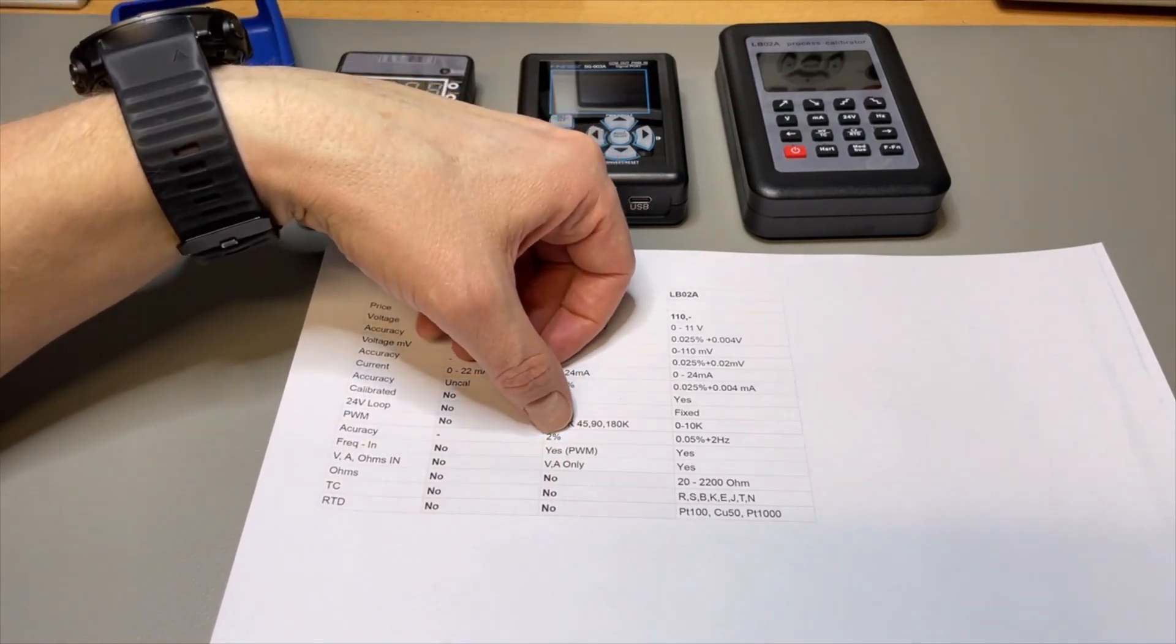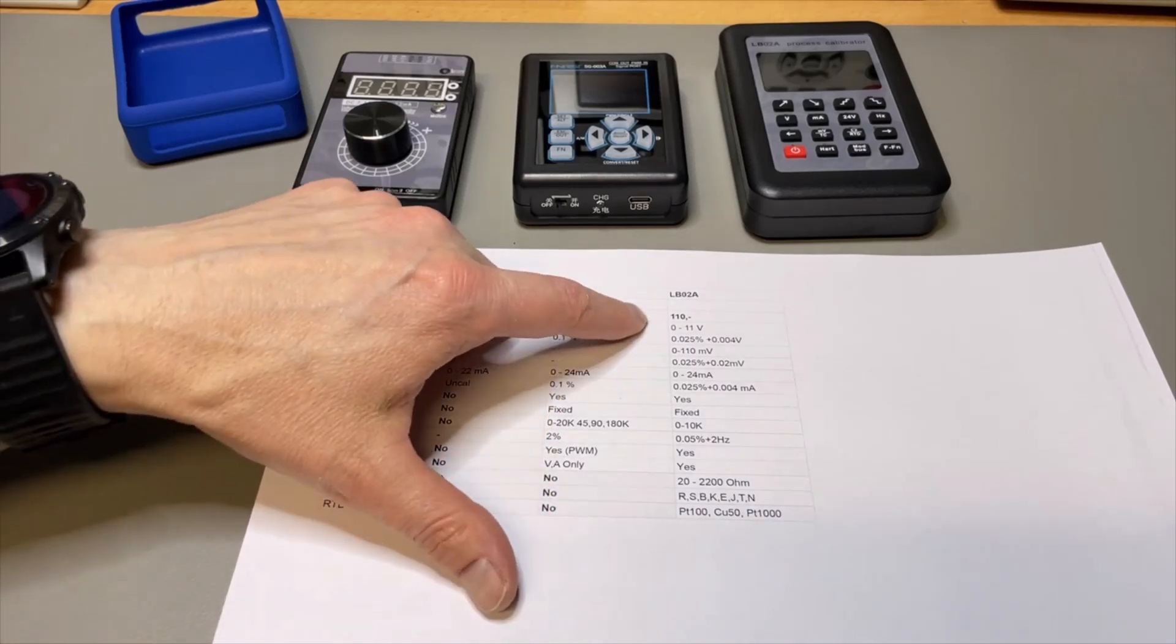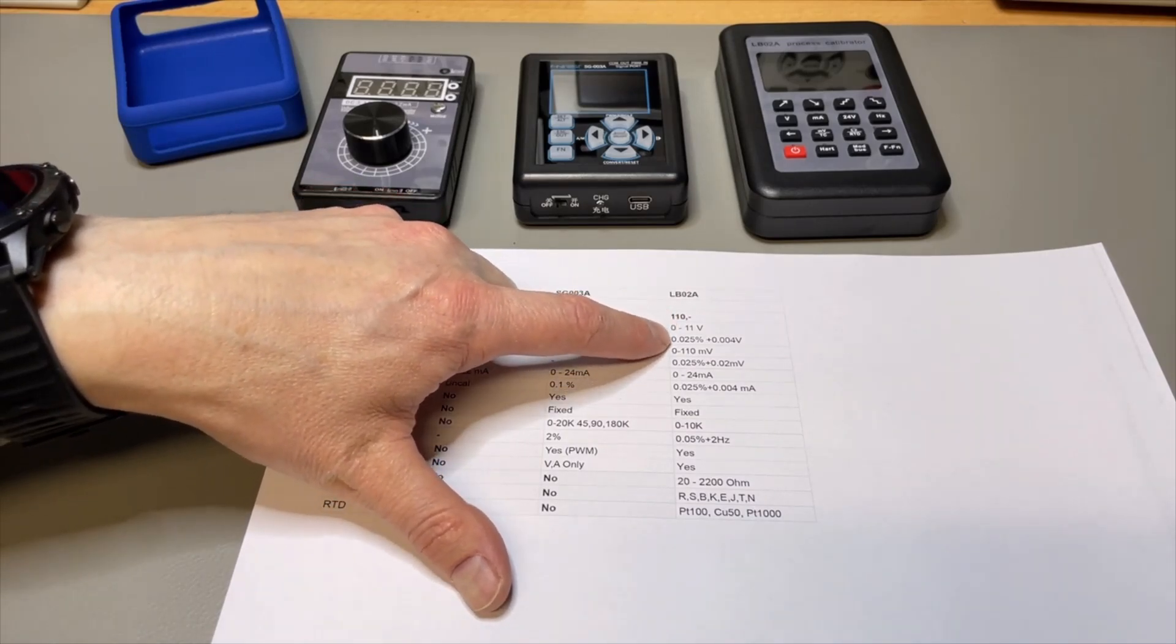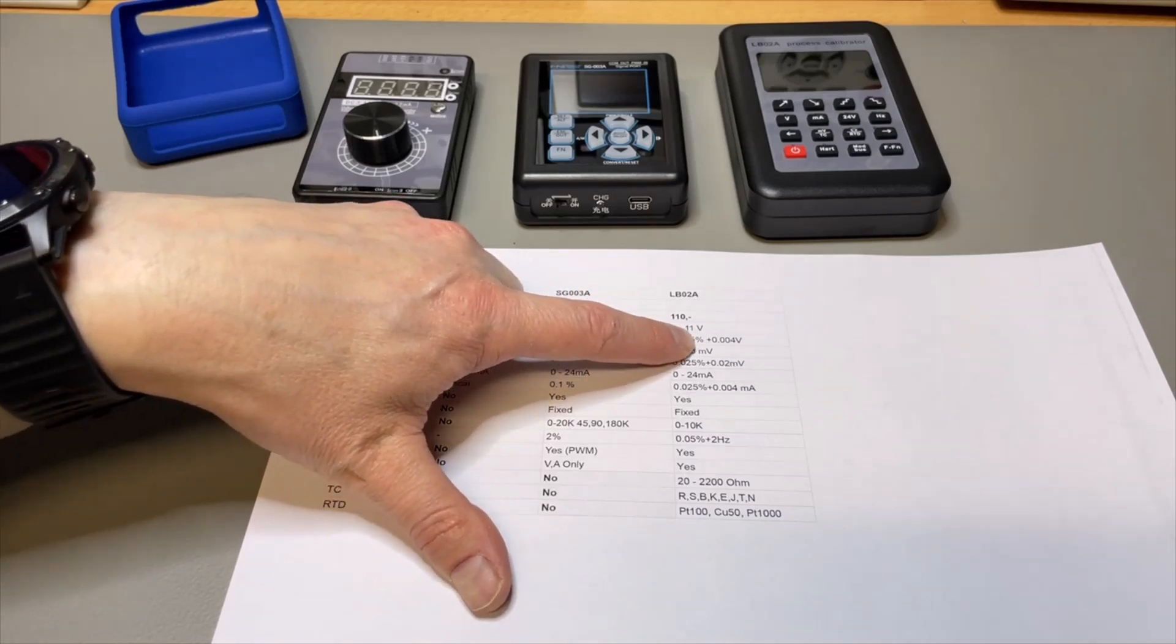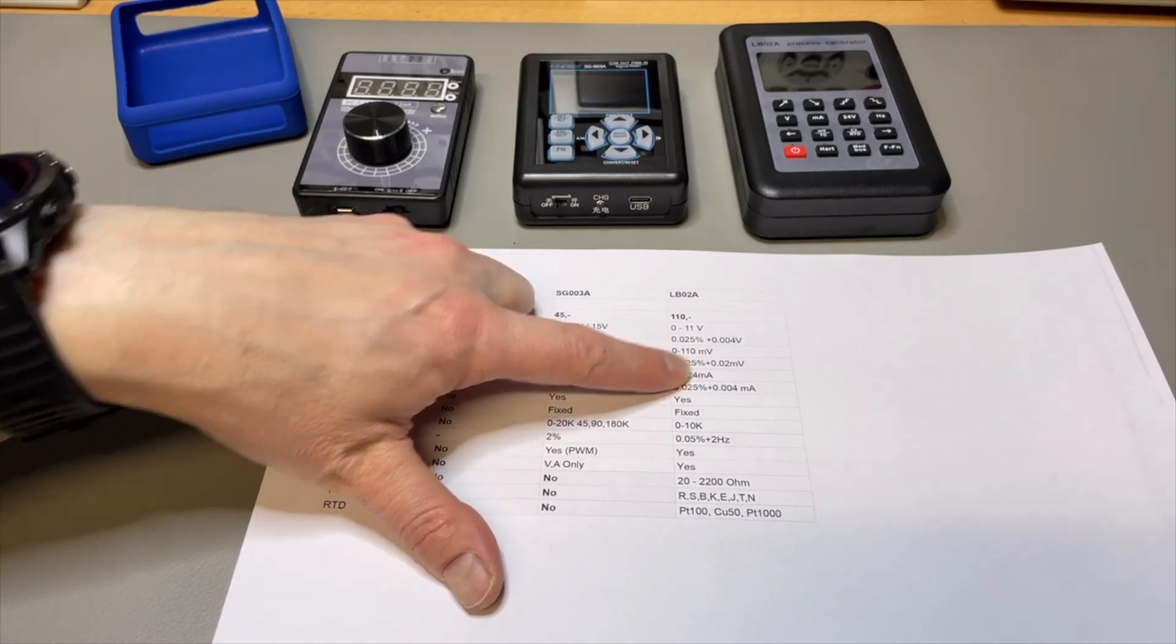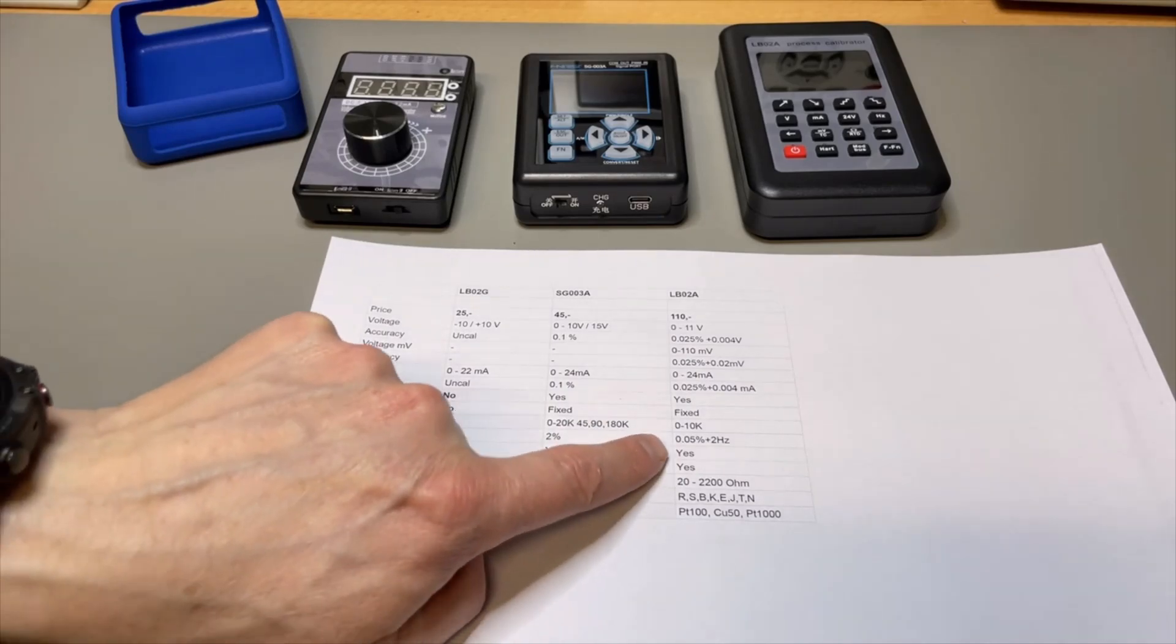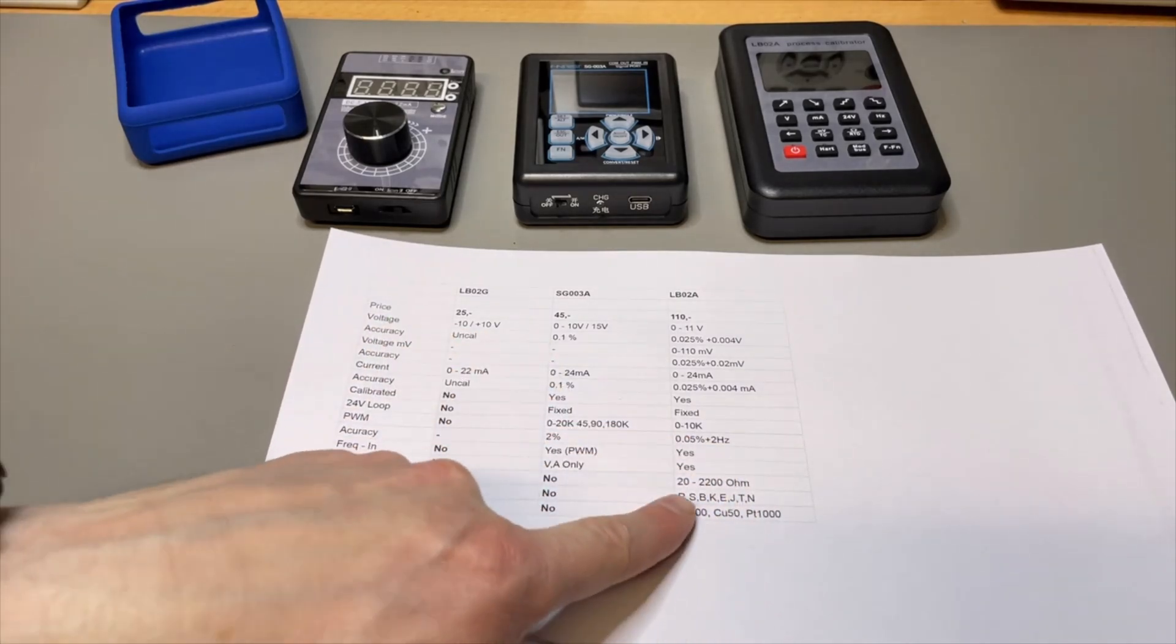As you can see that is only 2 percent accurate for the PWM function. You can even measure voltage and amps with it. If you want something better then it's this one, the LB02A. It can do 0 to 11 volts and it is 0.025 percent and it even has a millivolt setting as well. Current also. It comes calibrated. We saw that, it actually looked quite good. In the end the extra is all your temperature control and your ohms emulation.